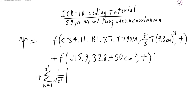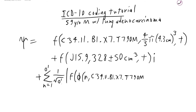We will again have our function here of each ICD-10 base code — we can write a function for that. This will be little ψ of organ n with a metastasis of this case: C34.11.B1.X7.T790M. That will give us the ICD-10 for each metastasis — we will have to do this manually later. And then we will add the size component and the time, which ends the function and the eigenstate.